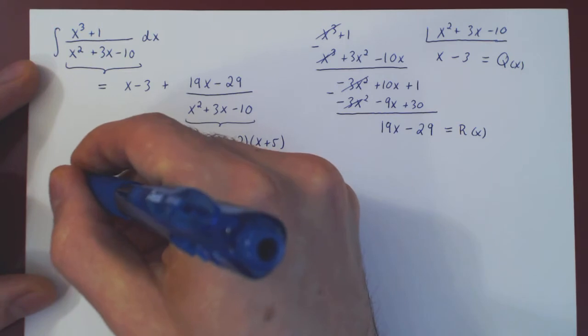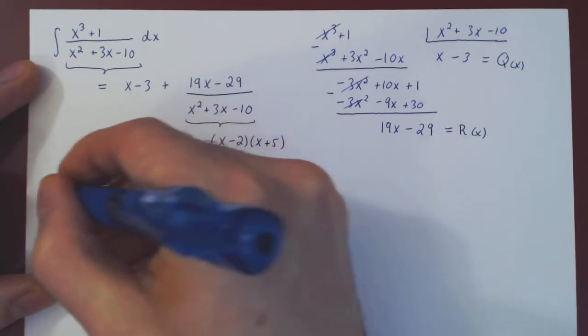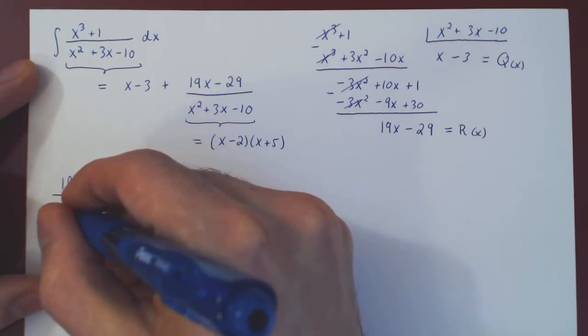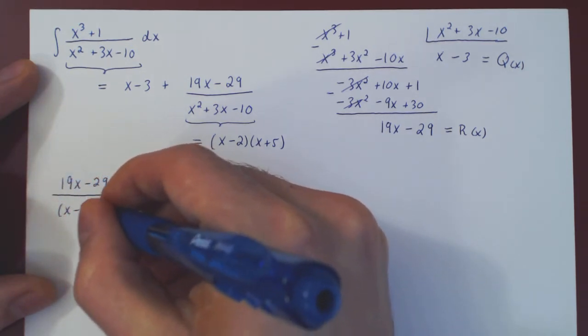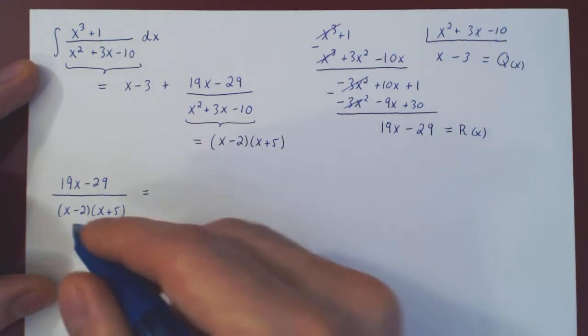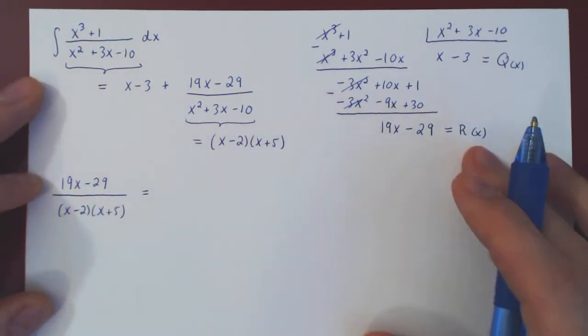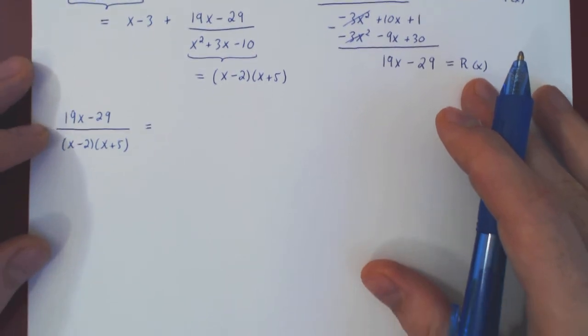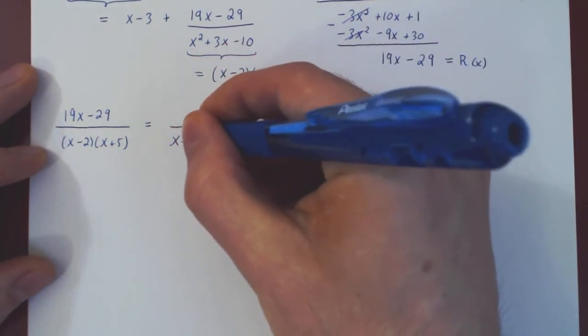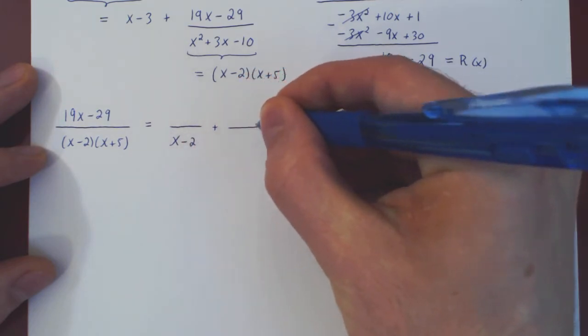So we want 19x minus 29 over x minus 2 times x plus 5 into a sum of partial fractions. Well, both factors show up only once, so they will each give us a single partial fraction, so we'll have A over x minus 2 plus B over x plus 5.